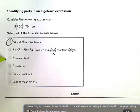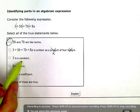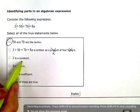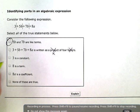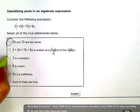3 is a constant. If I look at this term here, it's just a number. No variables. Nothing else. Just a number. That's what makes a constant term. It's just a number with no variables or anything else attached to it. So that one is true.